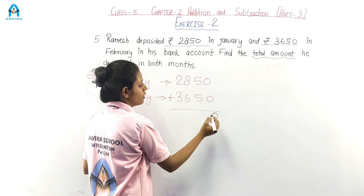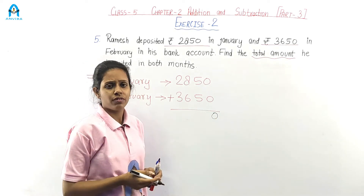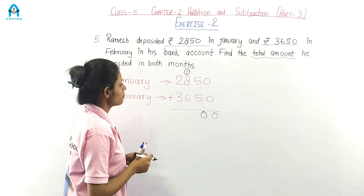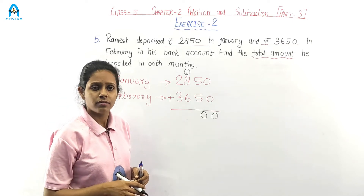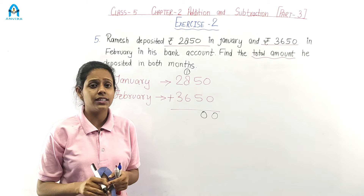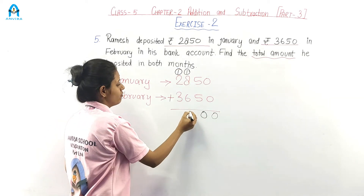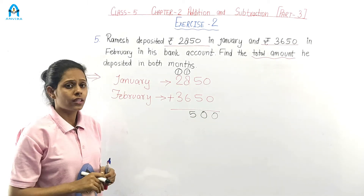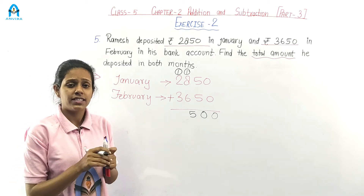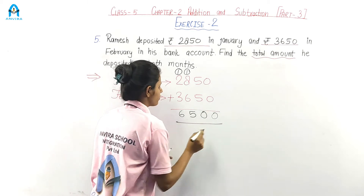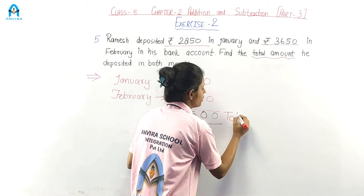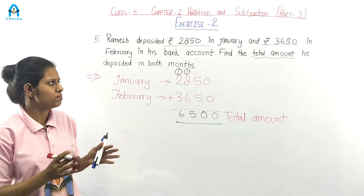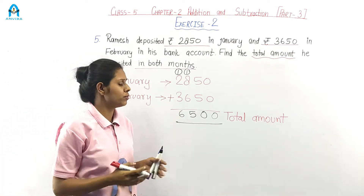0 plus 0 is 0. 5 plus 5 is 10, write 0 carry 1. 1 plus 8 is 9, plus 6 is 15, write 5 carry 1. 1 plus 2 is 3, plus 3 is 6. So the total amount he deposited in his bank account in both months is Rs. 6,500.